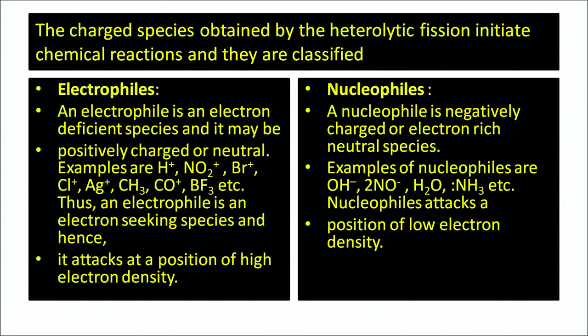The charged species obtained by heterolytic fission initiate chemical reactions and are classified as electrophiles and nucleophiles. Electrophiles are electron-deficient species; they can be positively charged or neutral. Whereas nucleophiles are negatively charged or electron-rich neutral species — examples are OH⁻, NO⁻, water molecule. Nucleophiles attack a position of low electron density, whereas electrophiles attack a position of high electron density.